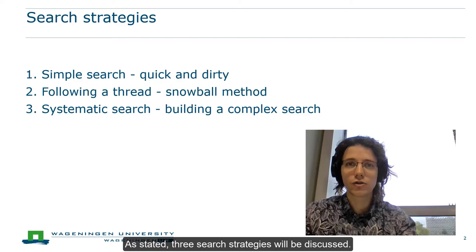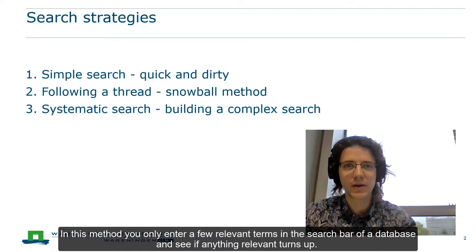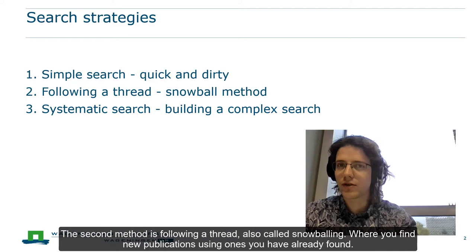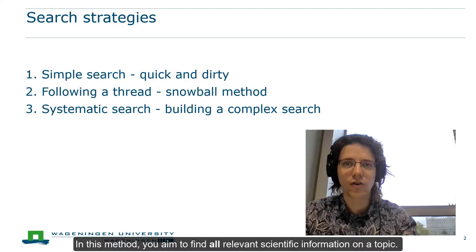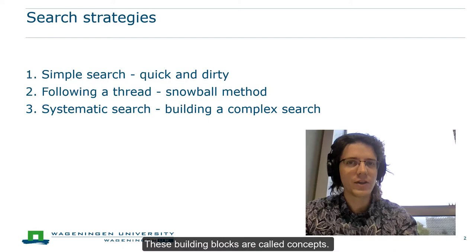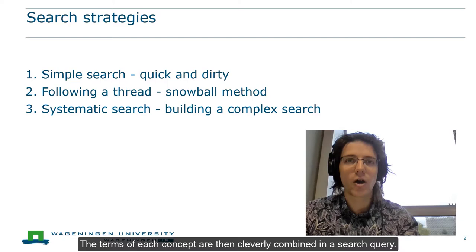Three search strategies will be discussed. Firstly, there is the simple search, also called a quick and dirty search. In this method you only enter a few relevant terms in the search bar of a database and see if anything relevant turns up. The second method is following a thread, also called snowballing, where you find new publications using ones you have already found. The third search strategy is a systematic search. In this method you aim to find all relevant scientific information on a topic. This is achieved by identifying the main building blocks of your topic, called concepts. The next step is coming up with multiple terms that describe each concept, which are then cleverly combined in a search query.